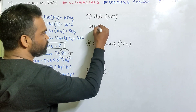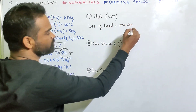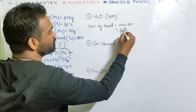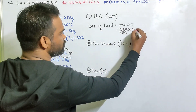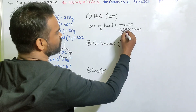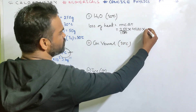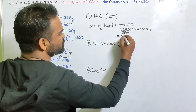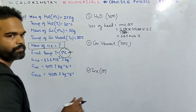In this case, water's loss of heat is MC ΔT. M is 250 grams, so 250/1000 kg. C is 4200 joule per kg. Change in temperature is 30 to 5, which is 25. So 250/1000 × 4200 × 25 = 26,250 joule. This is Q1.